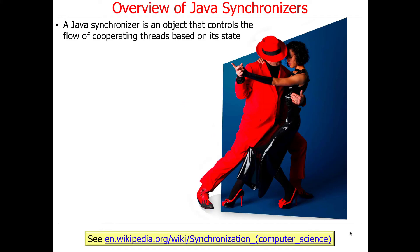Remember we talked about shared objects earlier, and one of the goals of concurrency was to coordinate or interact between shared objects. That's what a synchronizer does — it's basically an object that controls the flow of control of cooperating threads based on the state of the synchronizer.